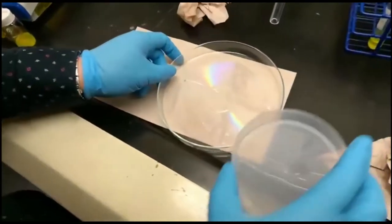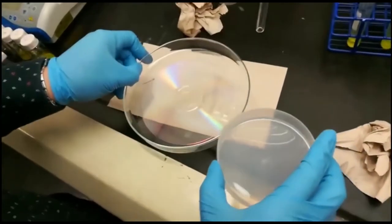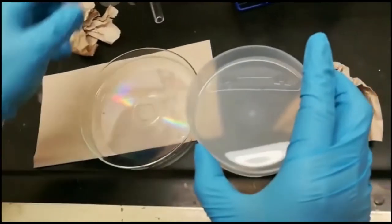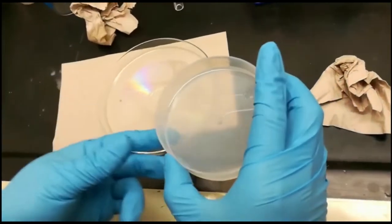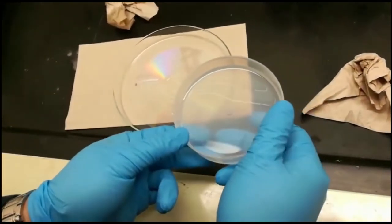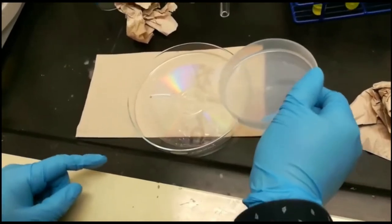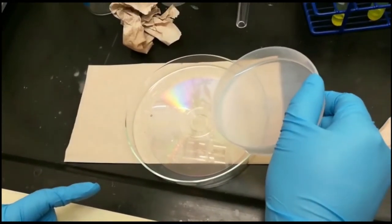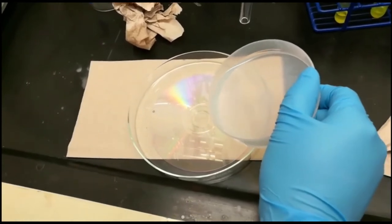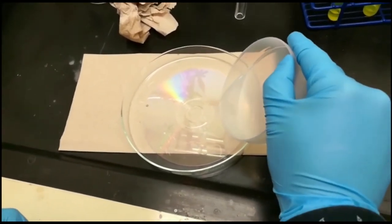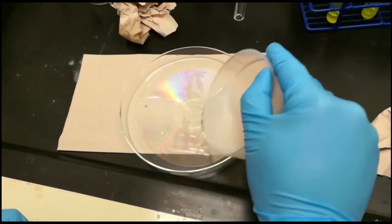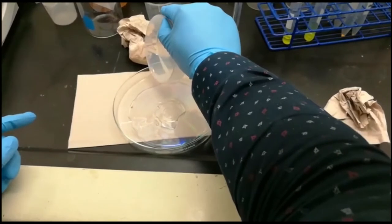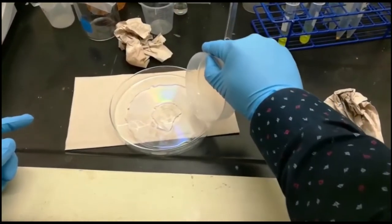As you can see, we already have a transparent DVD disc without organic dye. Then we have a PDMS solution, so we can pour this PDMS solution onto the DVD disc. In this way we can replicate the grating structures in the PDMS as well.